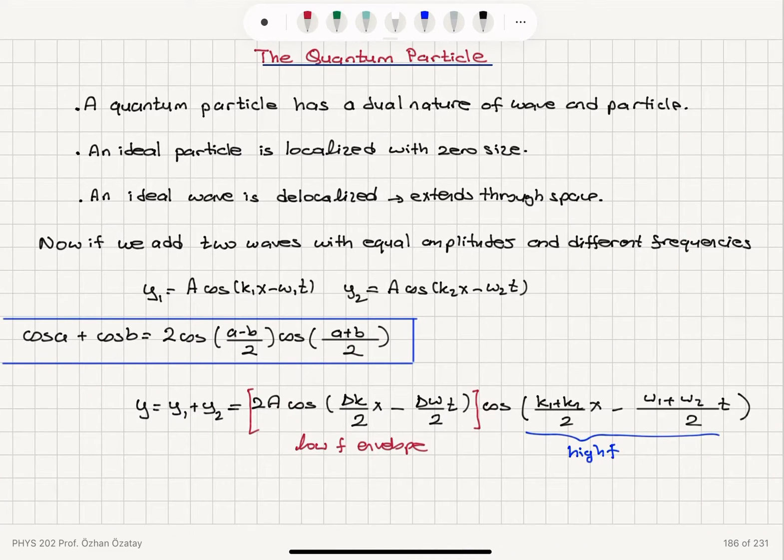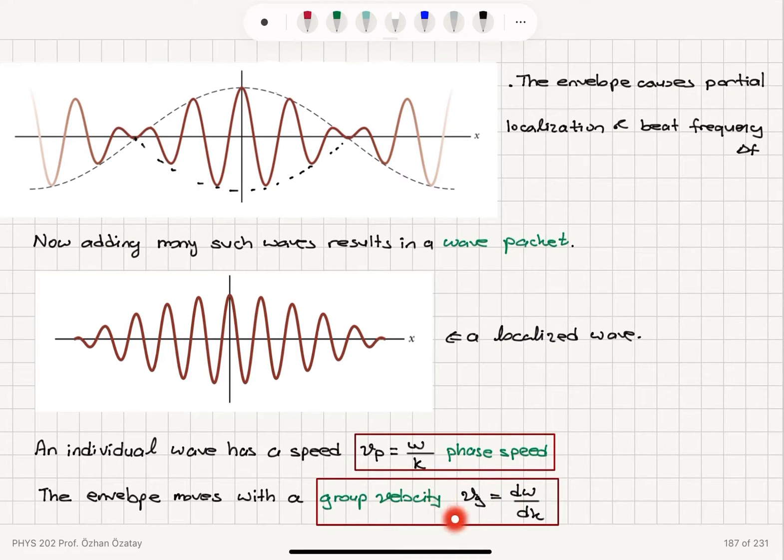So d omega dk, that is the speed of this low frequency envelope. Delta omega divided by delta k turns into d omega dk, the group velocity.